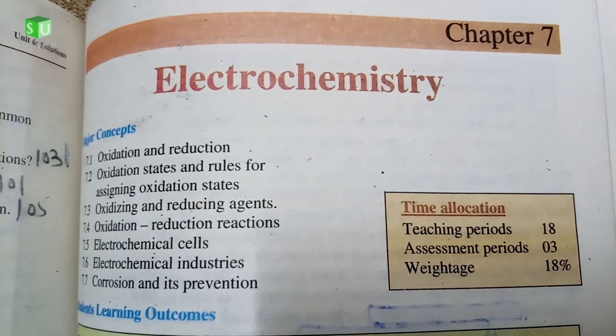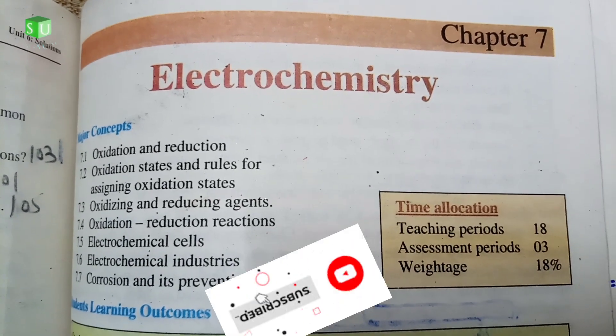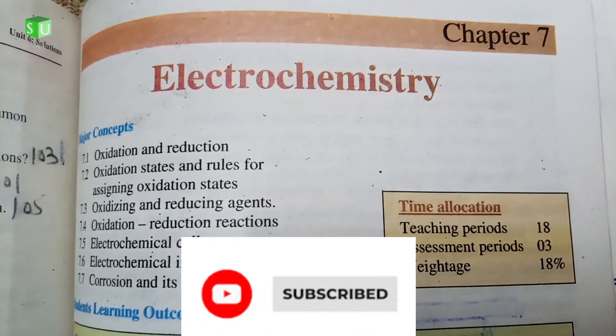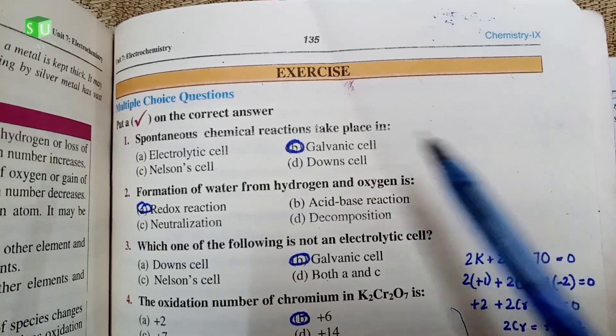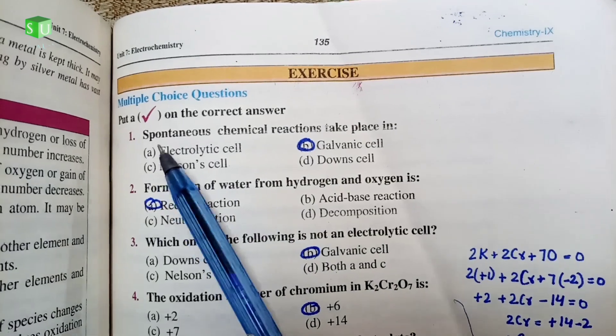Asalaamu alaykum students, hopefully you all are fine and doing good. So today we'll cover Punjab textbook 9th class chemistry chapter 7 electrochemistry exercise MCQs. This is for page number 135 starting from number 1.